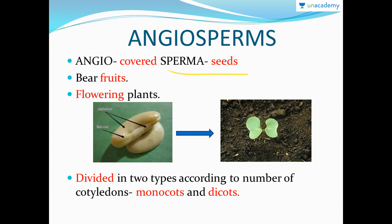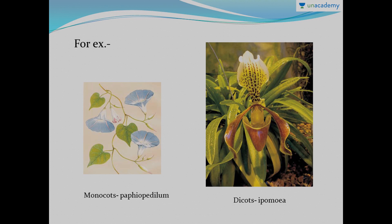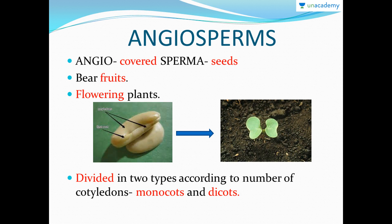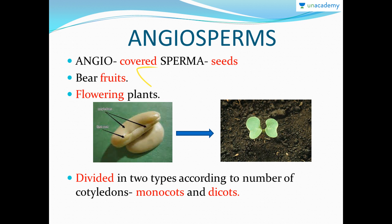We already know that angiosperms bear fruits and the seeds are inside the fruits. These are also called flowering plants, because flowers are what produce fruits. As you know, pollen grains come and attach to the stigma, and after pollination the flower develops into a fruit with the seed inside — that's why they are also called flowering plants.